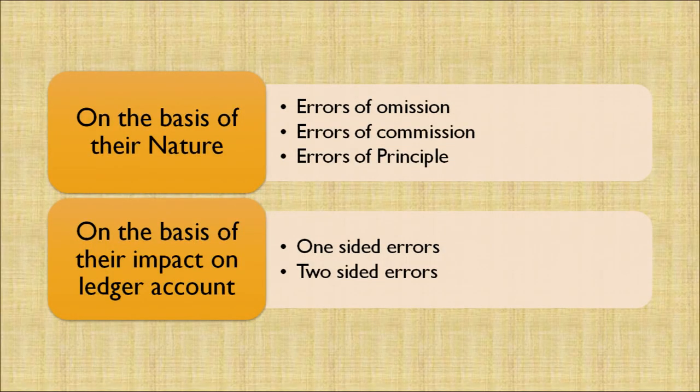Let's discuss the classifications of errors. There are two classifications: one is on the basis of their nature, and second is on the basis of their impact on the ledger amounts. On the basis of nature: first is error of omission, second is error of commission, third is error of principle. On the basis of impact on ledger amounts: first is one-sided errors, which cause the trial balance to not agree; second is two-sided errors, where the trial balance agrees on both sides but there is an impact on the principle side.